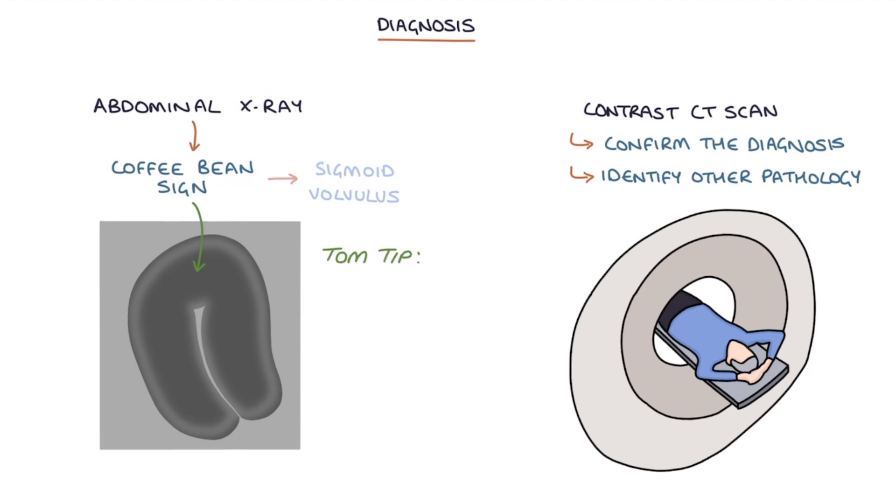A top tip for you: remember the coffee bean sign for your MCQ exams. It's worth looking up photographs so that you can recognize it and immediately know the diagnosis, which is a sigmoid volvulus if it comes up.